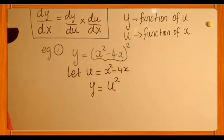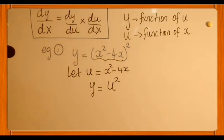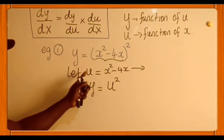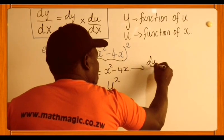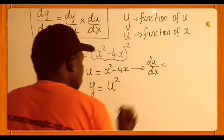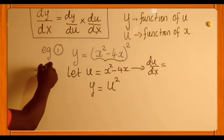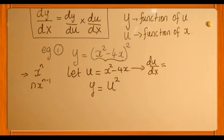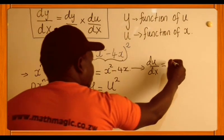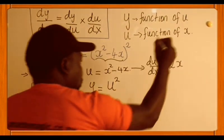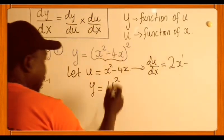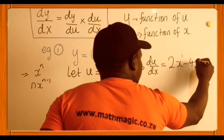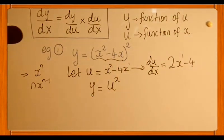Our chain rule requires us to have du/dx and dy/du. We are going to find du/dx. So du/dx — remember, if you are differentiating x to the n, it's n times x to the n minus 1. Differentiating x squared minus 4x: the 2 drops down, that's 2x to the power of 1. Minus 4x to the power of 0. So this is 2x minus 4.